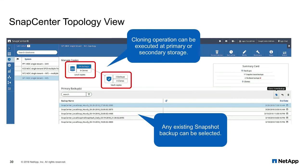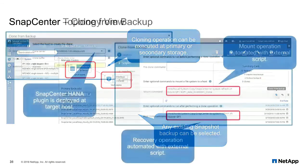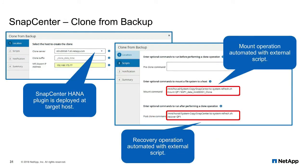By selecting one of the storage systems, you can see the list of existing backups and select one to use as the basis for your system refresh operation. Within the workflow dialog, you need to provide the IP address of the target host where you want to mount the FlexClone volume. The target host has to run the HANA plugin, so you need to deploy that plugin at the target host. In the second step of the workflow, you can provide external scripts to execute the mount and recovery operations at the target host.